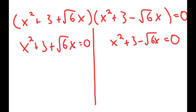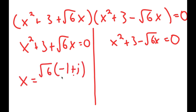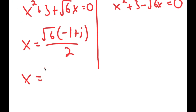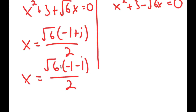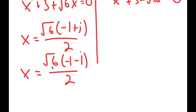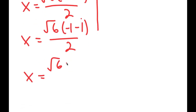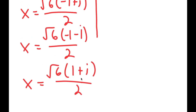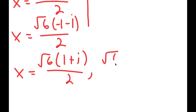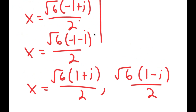This gives me two equations: x squared plus 3 plus the square root of 6 times x equals 0, and x squared plus 3 minus the square root of 6 times x equals 0. Since both are quadratic equations, you can use the quadratic formula to solve them. Applying the quadratic formula, you should get x equals the square root of 6 times negative 1 plus i over 2, x equals the square root of 6 times negative 1 minus i over 2, and x equals the square root of 6 times i plus 1 over 2. These are your four solutions.